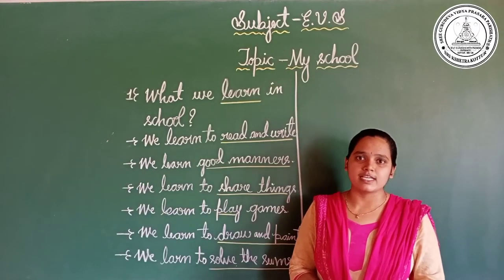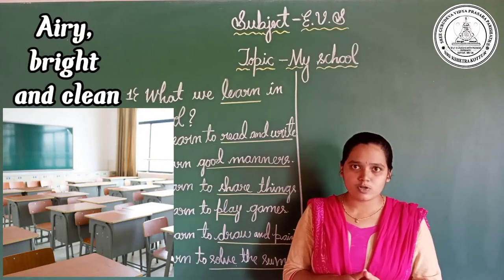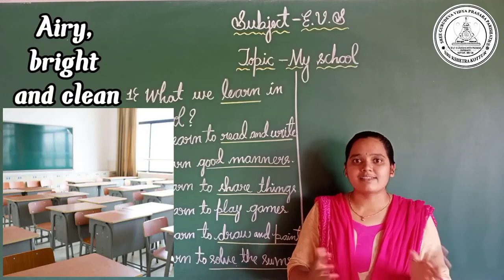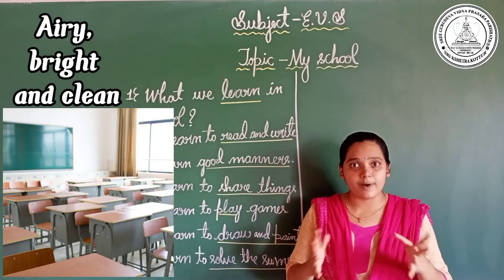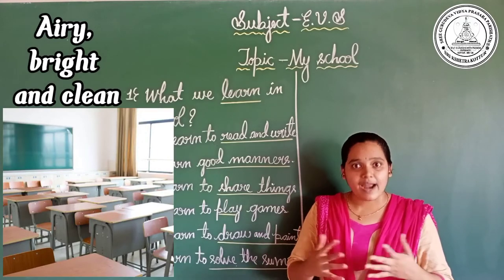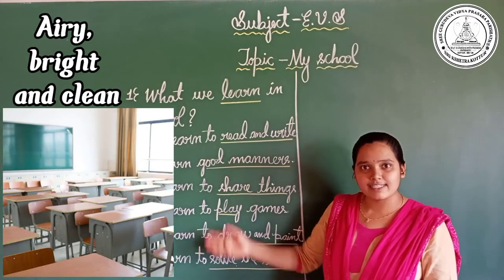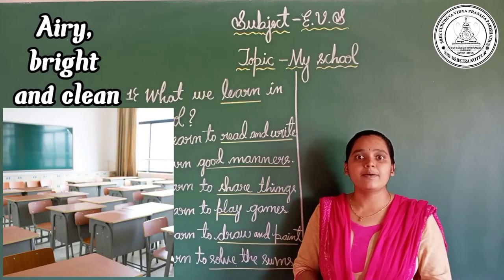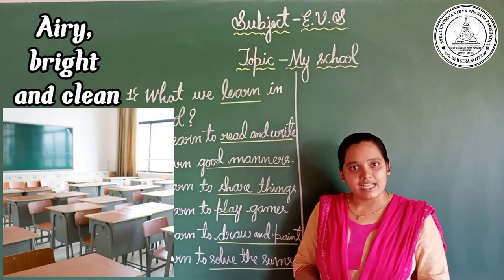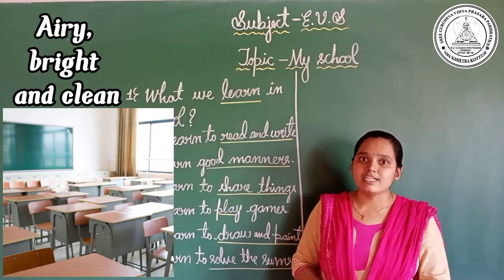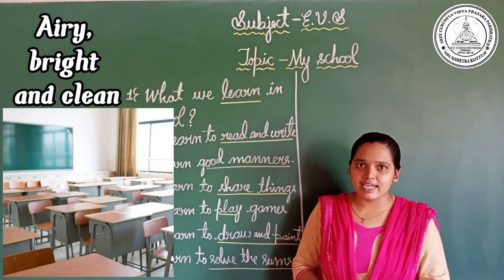Dear children, how should our classroom be? Our classroom should be airy, bright, and clean. What is airy? The classroom should have doors and windows so that air can pass in and out, making you feel comfortable. Our classroom should also be bright — it should not be in a dark place, because if it is dark, you will not be able to see what is written on the board. And classroom should be clean so you can comfortably listen to the classes.